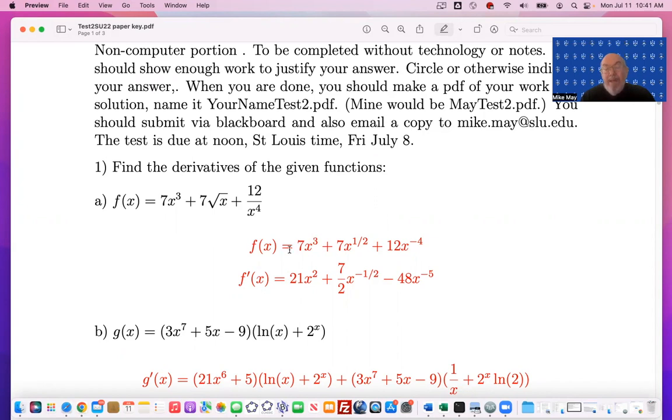You bring the exponent down to the front, and you drop it by one. And so 7x cubed becomes 21x squared. 7x to the one-half becomes 7-halves x to the minus one-half. 12x to the minus fourth becomes minus 48x to the minus fifth.